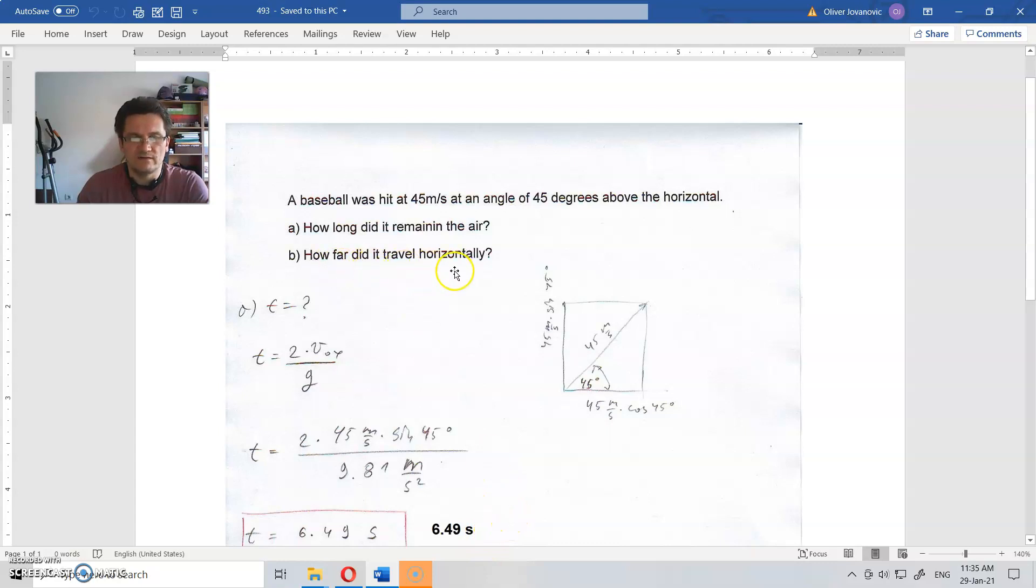How far did we travel horizontally? For horizontal motion, horizontal motion is constant. That means initial speed in horizontal direction is constant, and as you can see here, it's the same as this one. So you have a time of the motion, you have what that speed is, it's easy to calculate the horizontal displacement.